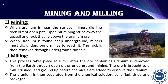First, we see what is mining. When uranium is near the surface, miners take the rock out of open pits. Open pit mining strips away the top soil and rock that lies above the uranium ore. When uranium is found deep underground, miners must dig underground mines to reach it. The rock is then removed through underground tunnels. After this step, milling starts. This process takes place at a mill after the ore containing uranium is removed from the earth through open pit or underground mining.